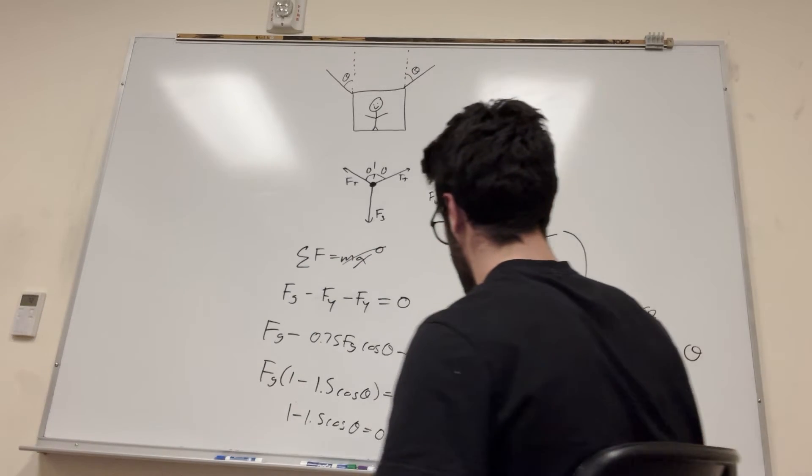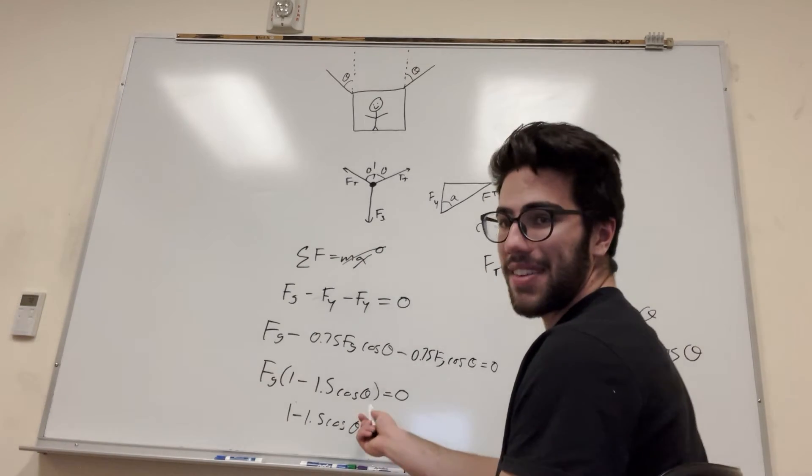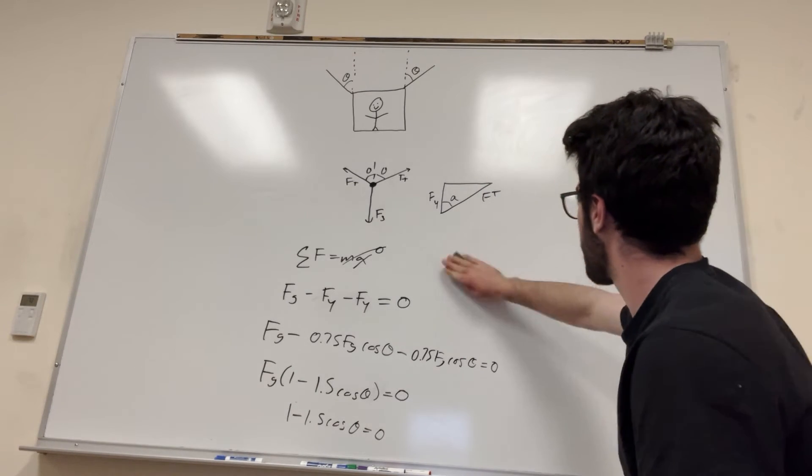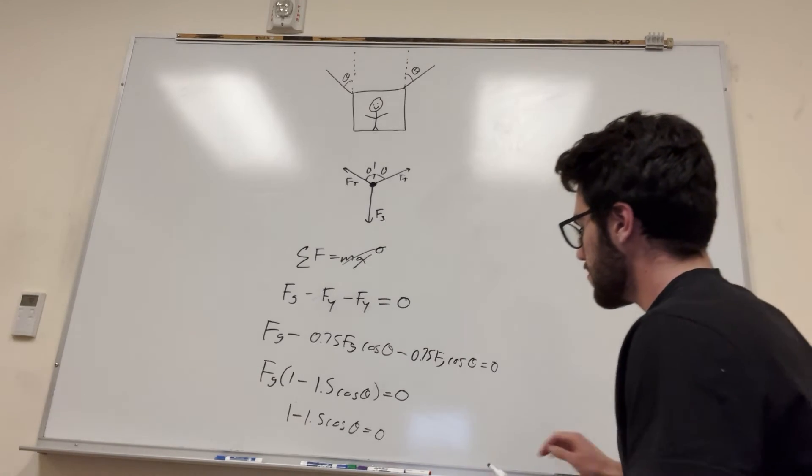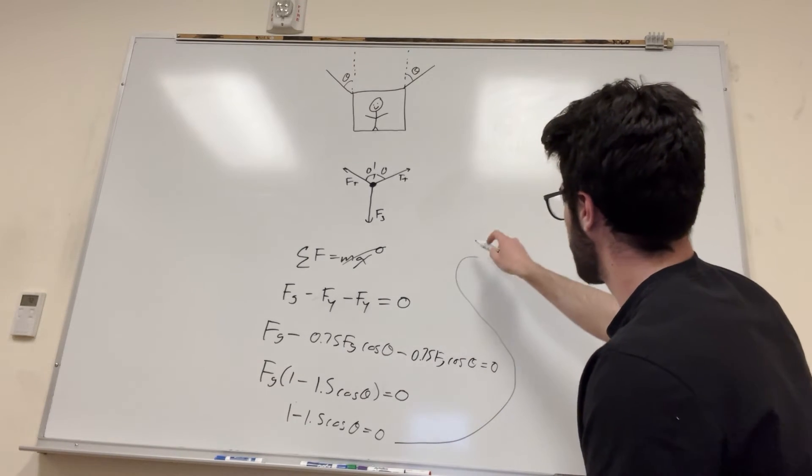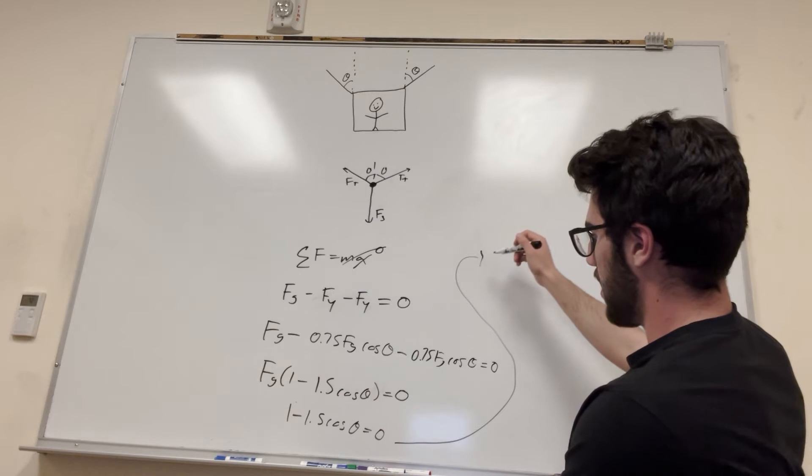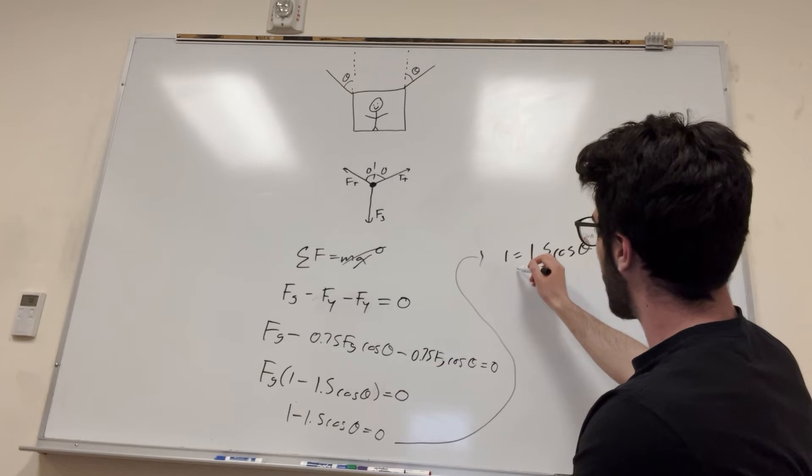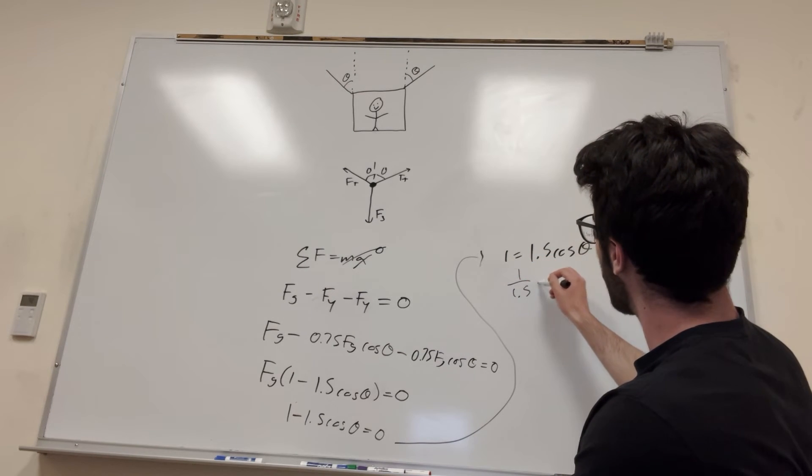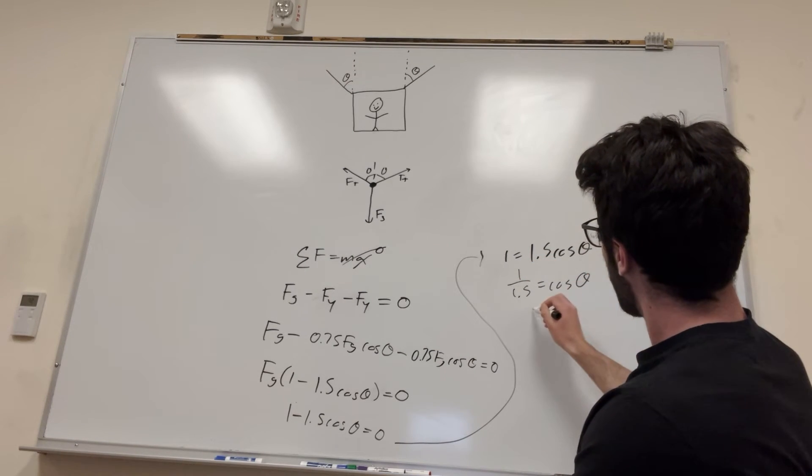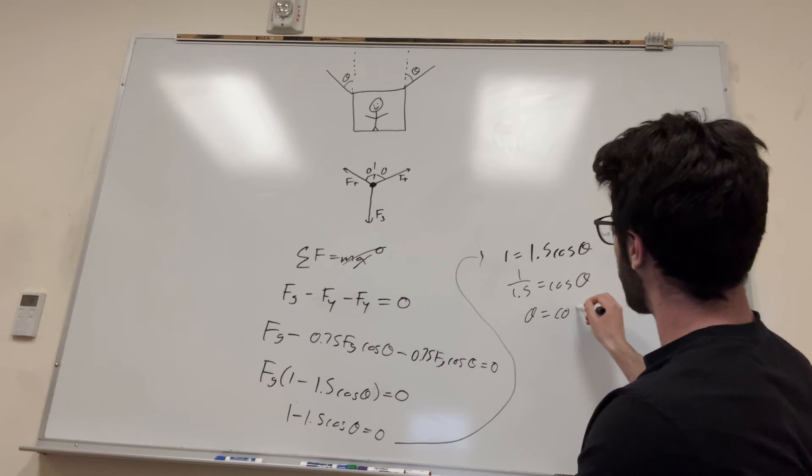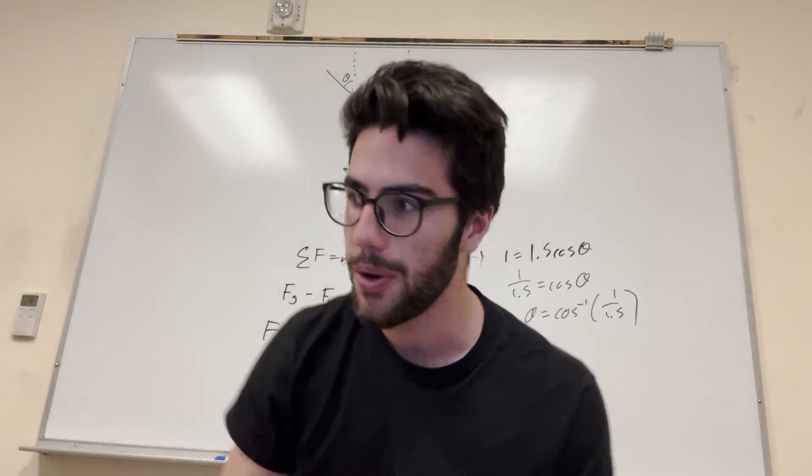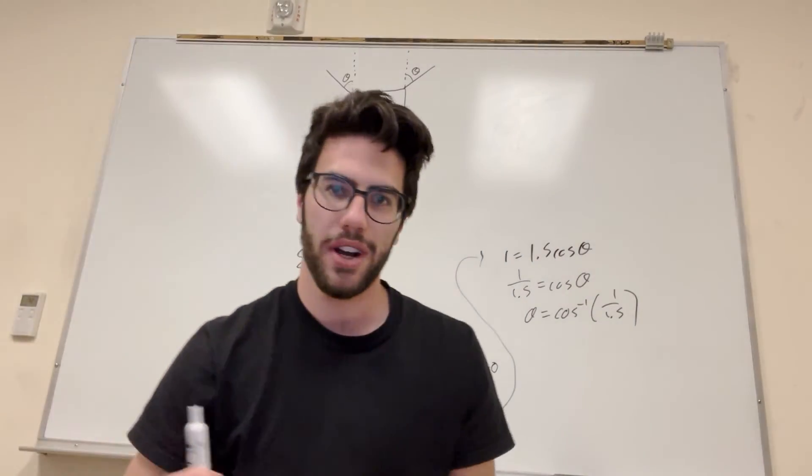We're on the path, right? All we have left is some theta and some numbers, so we can figure it out from here. Let me go ahead and erase some of this and just work it out up here. Okay, so then it's going to be 1 is equal to 1.5 cosine of theta. 1 divided by 1.5 is equal to cosine of theta. Theta is equal to inverse cosine of 1 over 1.5. Plug that into your calculator, and you are going to get 48 degrees.